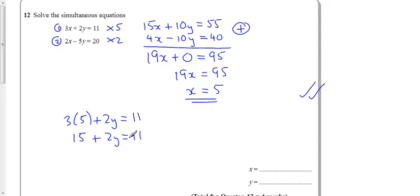Well, I thought this was going to be positive, because now, if I take away 15 from both sides, I get minus 4. So, therefore, y must be minus 2.